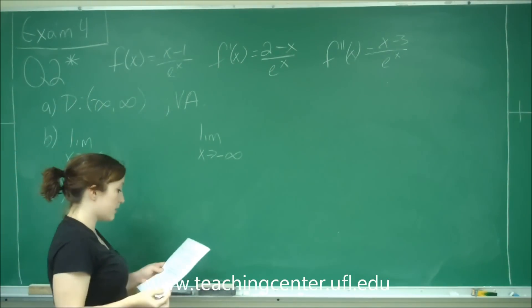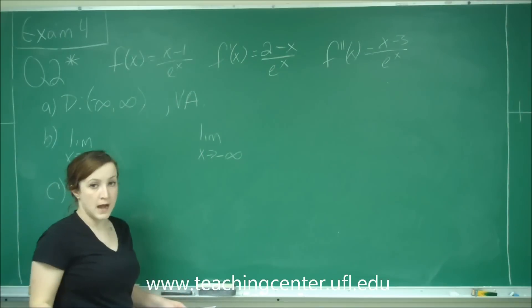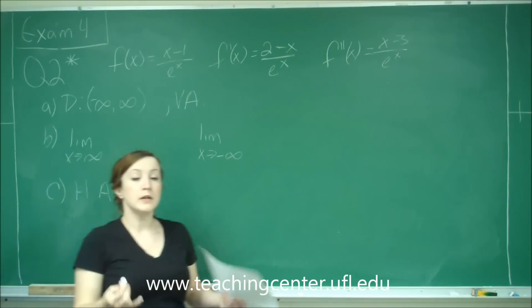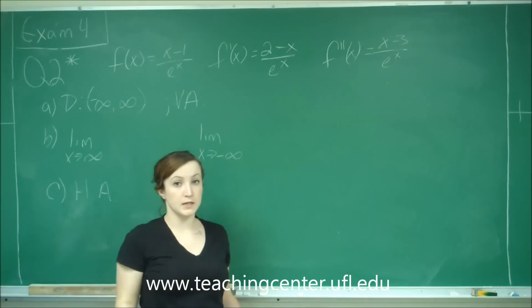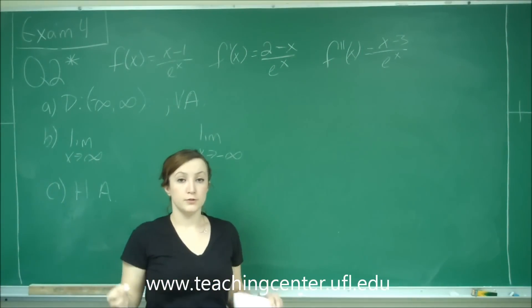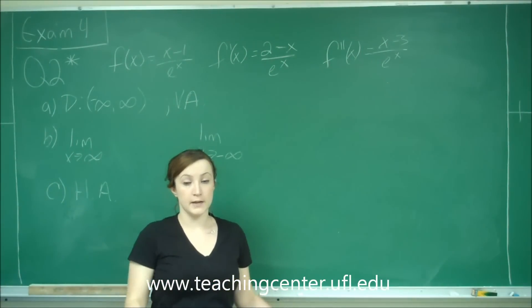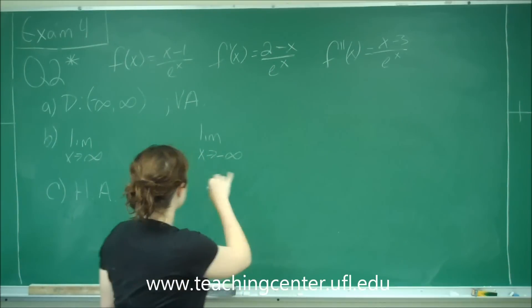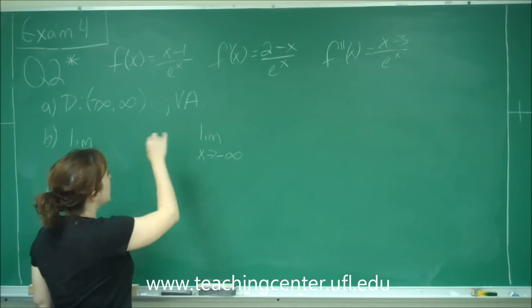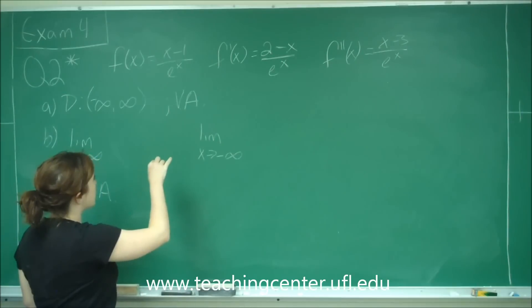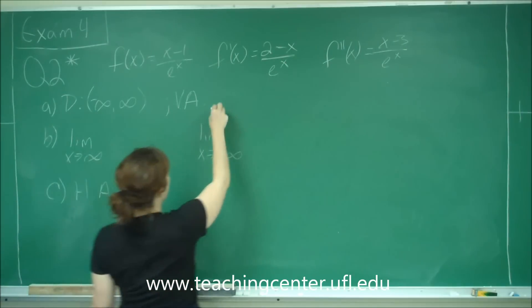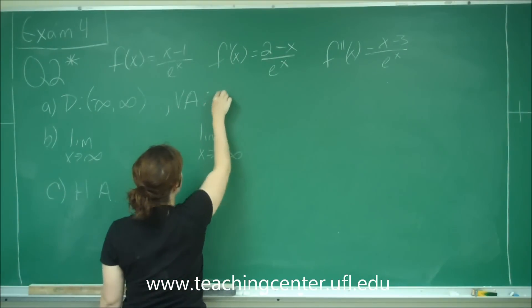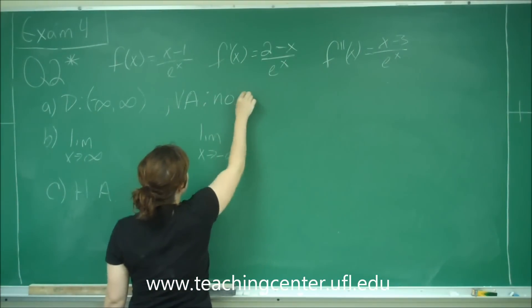Then it says we want to know the vertical asymptotes. A vertical asymptote is where our function is undefined due to the denominator equaling 0. Since e to the x never equals 0, no value of x makes that happen, so our vertical asymptotes: none.